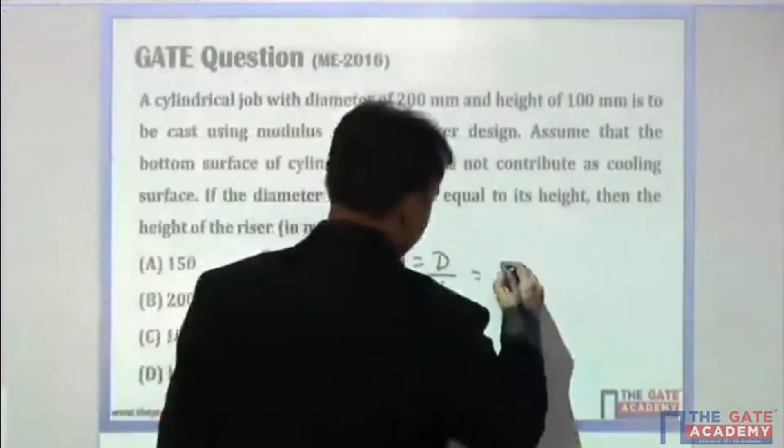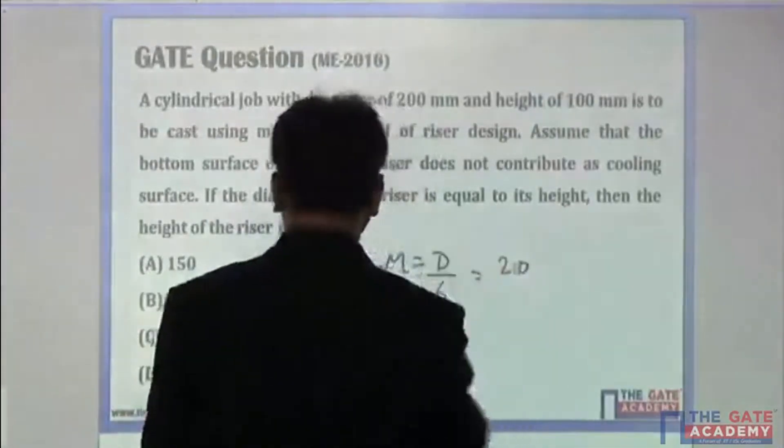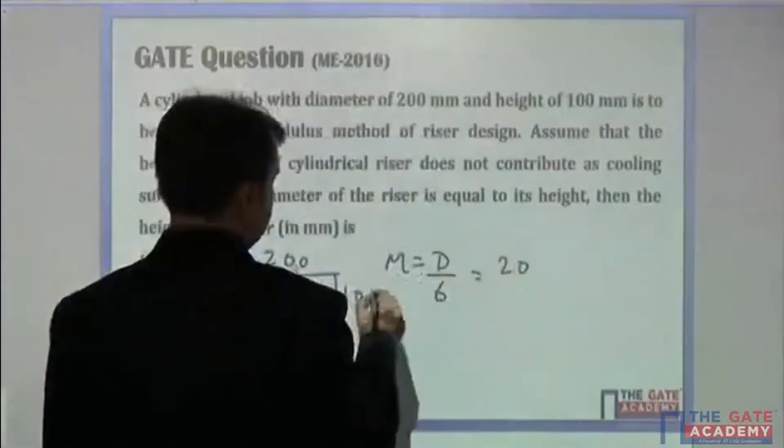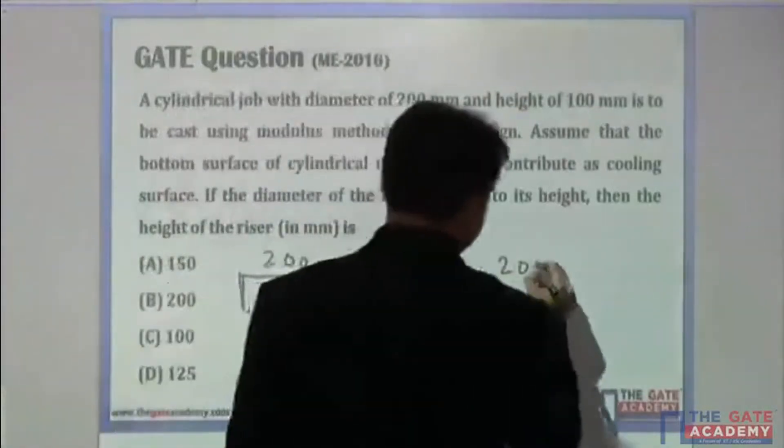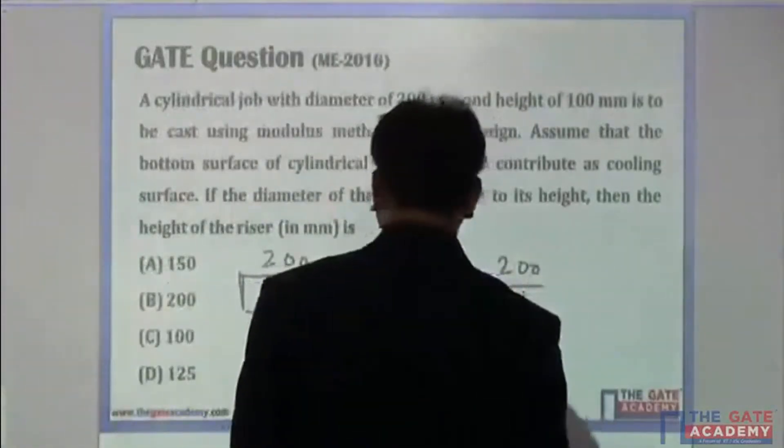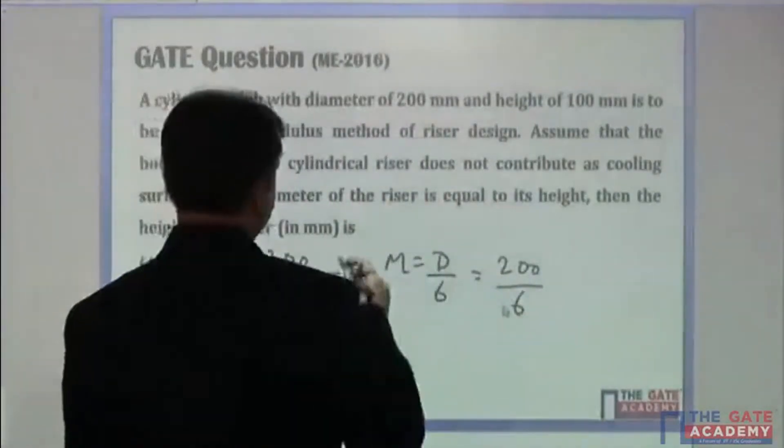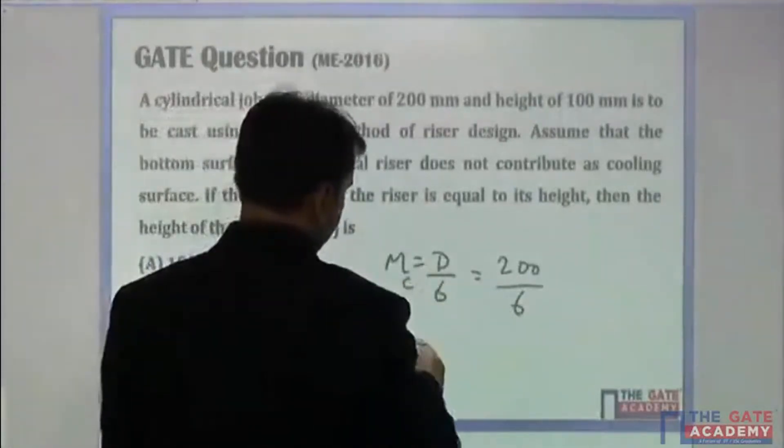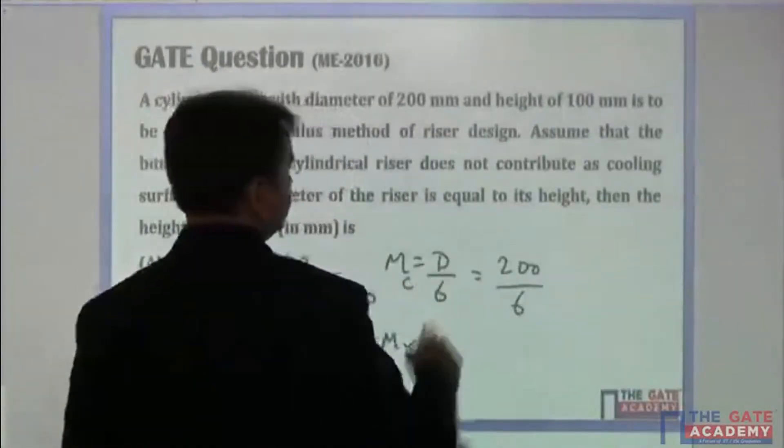The modulus is d by 6, so you can write it as 200 by 6. This is the modulus for the casting, mc.